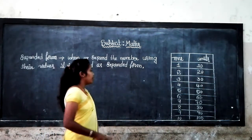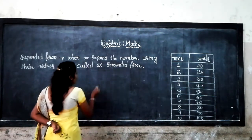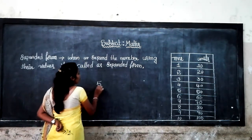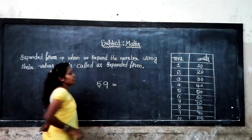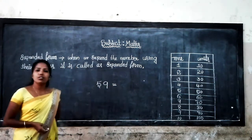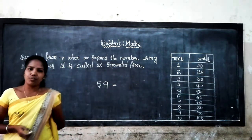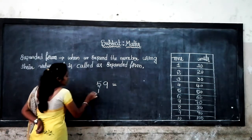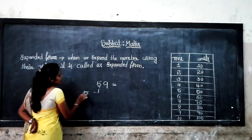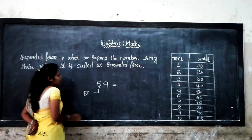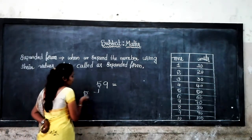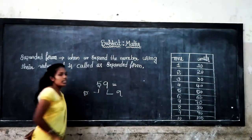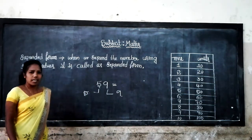Yes. The face value of 7 is 7. Can you find out the face value of 59? Yes, the face value of 59 is: the face value of 5 is 5, the face value of 9 is 9.